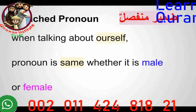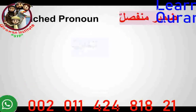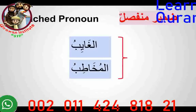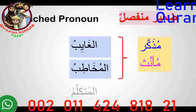So Damir Munfasil — the detached pronouns — are found in the third person (Al-Ghaib) and the second person (Al-Mukhatib). Both of these two sets of pronouns can be masculine, which is Muzakkar, or feminine, which is Mu'annas. The Mutakallim (first person) is on its own — only one set of pronouns for both male and female.